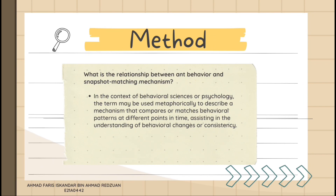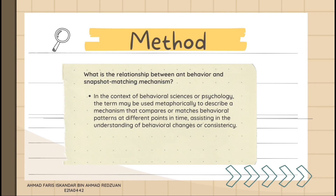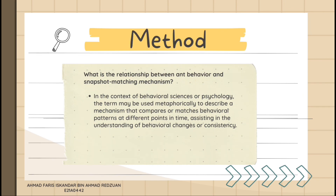What is the relationship between ant behavior and snapshot matching mechanism? In the context of behavioral science or physiology, the term may be used metaphorically to describe a mechanism that compares or matches behavioral patterns at different points in time, assisting in the understanding of behavioral change or consistency.